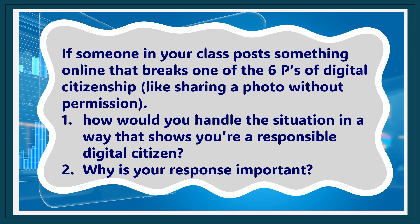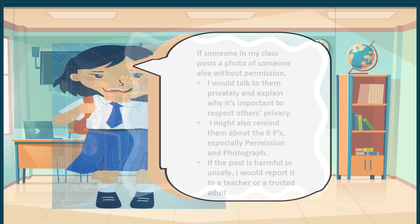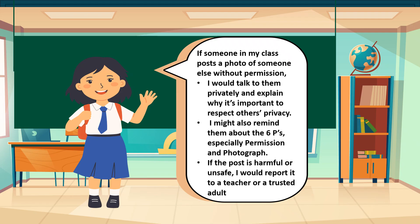If someone in your class posts something online that breaks one of the 6 Ps of digital citizenship — like sharing a photo without permission — how would you handle the situation in a way that shows you're a responsible digital citizen? Why is your response important? If someone in my class posts a photo of someone else without permission, I would talk to them privately and explain why it's important to respect others' privacy. I might also remind them about the 6 Ps, especially Permission and Photograph. If the post is harmful or unsafe, I would report it to a teacher or a trusted adult.